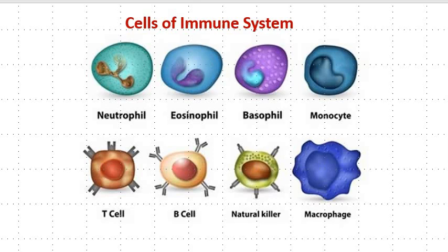There are two kinds of lymphocytes: T cells and B cells. T cells are part of the adaptive immune system and are trained to recognize a particular antigen; they function to actively destroy infected cells and signal other immune cells to participate in the immune response. B cells are like the body's military intelligence system — they find their targets and send defenses to lock them. T cells are like soldiers — they destroy the invaders that the intelligence system finds.